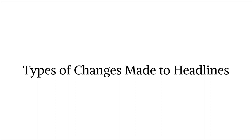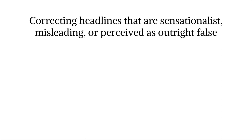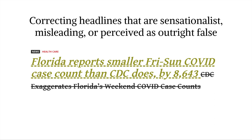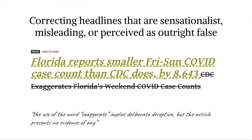We characterized the types of changes that users made to headlines. For example, many changes were made to correct headlines that were on a spectrum of sensationalist to misleading to perceived as outright false. These were headlines that were biased or exaggerated to the point of almost asserting falsehood, or left out essential information that could drastically change the message, or were inconsistent with the article's content. An example of such a change is shown. The participant explained that the use of the word 'exaggerate' implies deliberate deception, but the article presents no evidence of any.